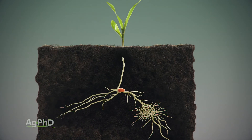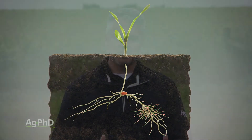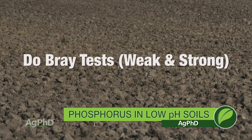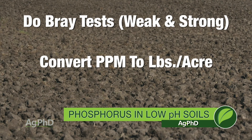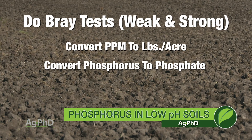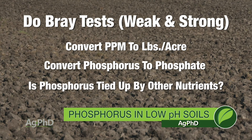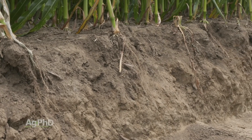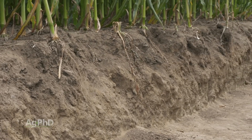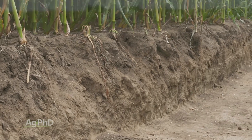There are a couple of things with phosphorus that are really important. When we talk about phosphorus in low pH ground, it's definitely different than in high pH ground. We want a different test run — in low pH soil, we want the Bray test for a more accurate measure of available phosphorus. Then make your conversions to pounds per acre, convert phosphorus to phosphate, and look at tie-up. We've got to look at total phosphorus in that soil — your crop most likely needs quite a bit, and if you don't have available phosphorus in ample supply, you can't expect top yields.